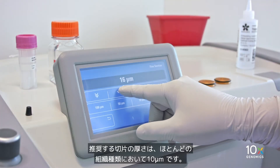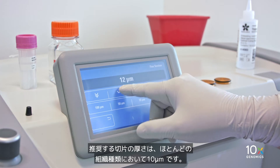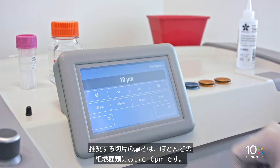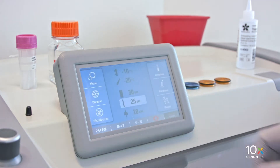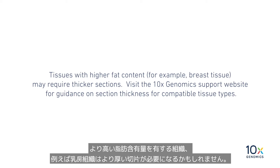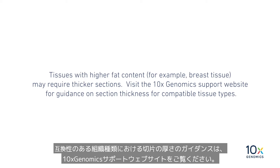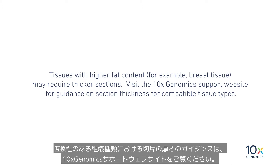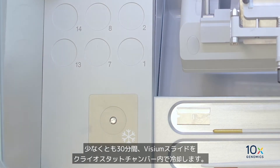Confirm the appropriate section thickness setting of the cryostat. The recommended section thickness is 10 microns for most tissue types. Tissues with higher fat content, for example breast tissue, may require thicker sections. Visit the 10x Genomics support website for guidance on section thickness for compatible tissue types.